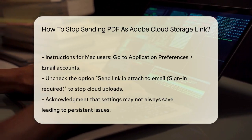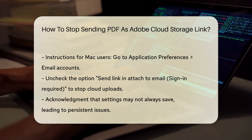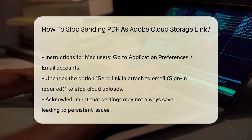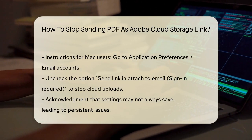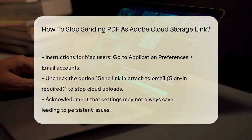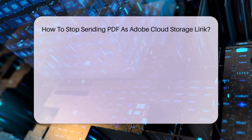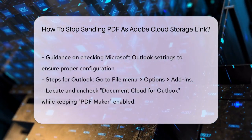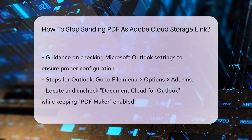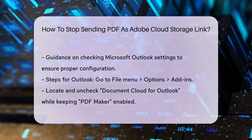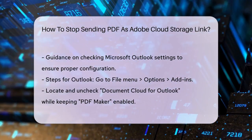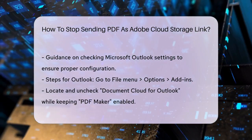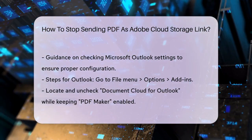To ensure this doesn't happen, you also need to check your Outlook settings. In Microsoft Outlook, go to the File menu, then click on Options near the bottom. On the left sidebar, navigate to Add-ins and click on it. In the pop-up window, you'll see a list of add-ins. Look for the Adobe-related add-ins, specifically the Document Cloud for Outlook option. Uncheck this box to disable it, but make sure to keep the PDF Maker option enabled if you need it.